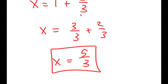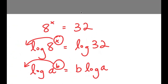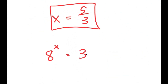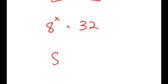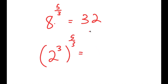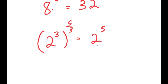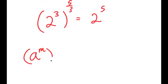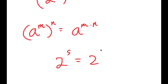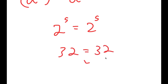To verify the answer: plugging x equals 5 over 3 back into 8 to the power of x equals 32, we get 8 to the power of 5 over 3. Since 8 equals 2 to the power of 3, this becomes 2 to the power of 3 to the power of 5 over 3. The 3s cancel, giving 2 to the power of 5, which equals 32. So 32 equals 32 — correct.